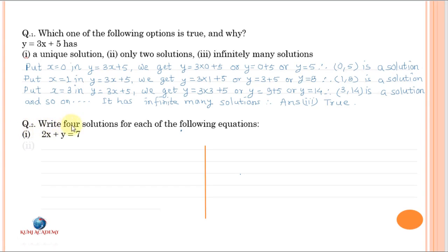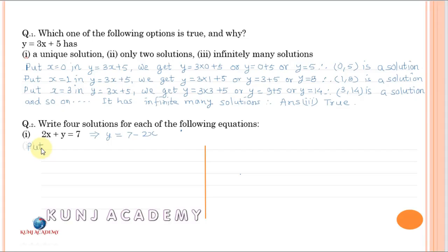Question: write 4 solutions for each of the following equations. The equation 2x + y = 7 can be written as y is equal to 7 minus 2x. Now put x equal to 0: y is equal to 7 minus 2 into 0, therefore (0, 7) is a solution.